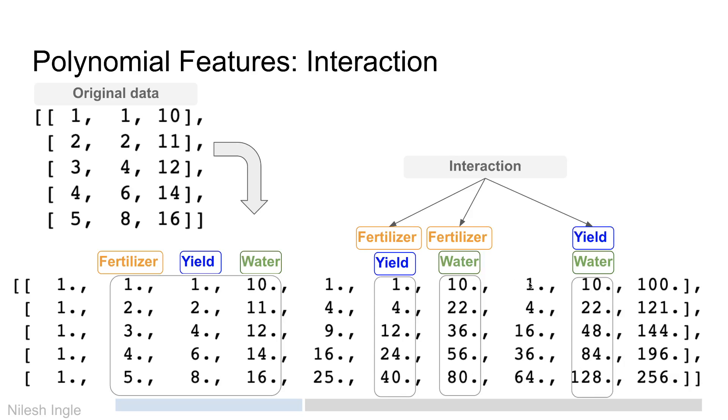Among these columns there are three columns that show the interaction between fertilizer-yield, fertilizer-water, and yield-water. In addition there are other columns in middle which are other parts of the polynomial equation. For example, this column right here is the square column for fertilizer.